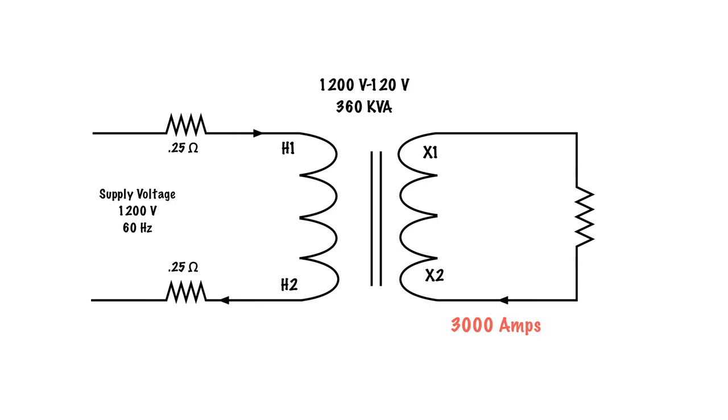Now remember when we talk about transformers, our primary is the source of voltage for the secondary, our secondary is the source of current for the primary. So we can take that 10 to 1 ratio and we can take 3000 amps divided by 10 to get the current on this side, or we could take 360,000 divided by 1200 volts to get our current on the primary. Either way works. 300 amps. We have 300 amps flowing in the primary because we have 3000 amps flowing in the secondary.